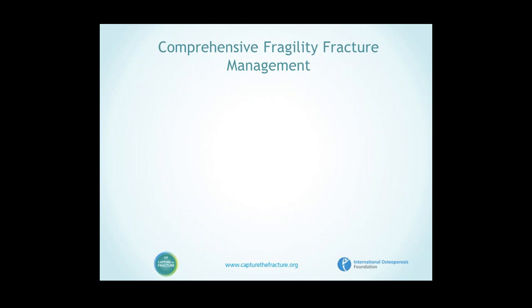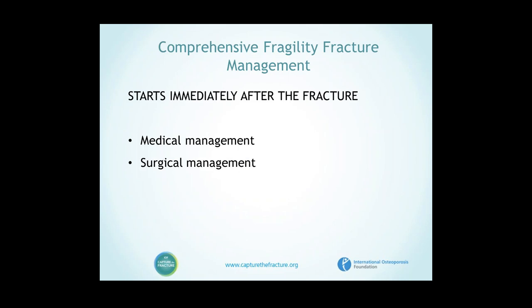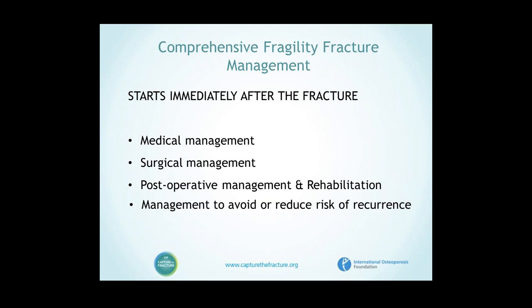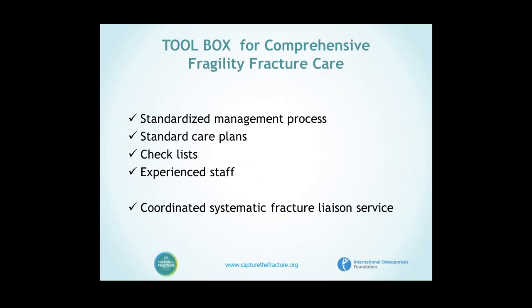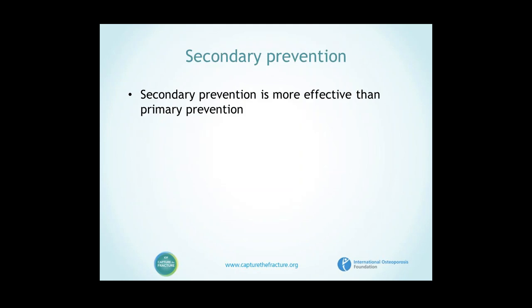When we discuss fragility fractures, we have to look at comprehensive fragility fracture management. This includes the medical management, surgical management, post-operative management and rehabilitation, and the management to avoid or reduce the risk of recurrence. We already have a toolbox — standardized management processes, care plans, checklists, and experienced staff. However, we need to add the final step: a coordinated, systematic fracture liaison service to properly take care of these patients. Secondary fracture prevention is more effective than primary prevention, and secondary prevention means avoidance of new fractures and recurrence.